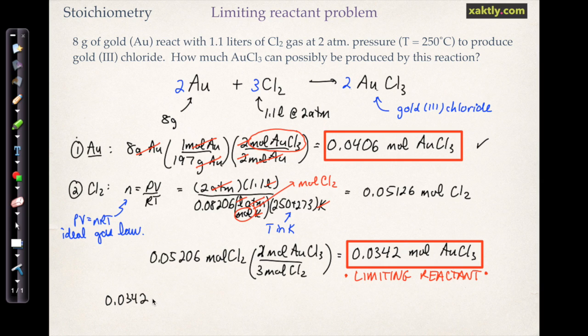So we can just use this 0.0342 moles of gold chloride to calculate the mass of gold chloride that would be produced. And that's just 0.0342 times, in the denominator, 1 mole of gold chloride, and then the molar mass of gold chloride is 302 grams per mole. So that gives us, let's cancel our units here, and that is about 10 grams of gold chloride would be produced by this reaction.